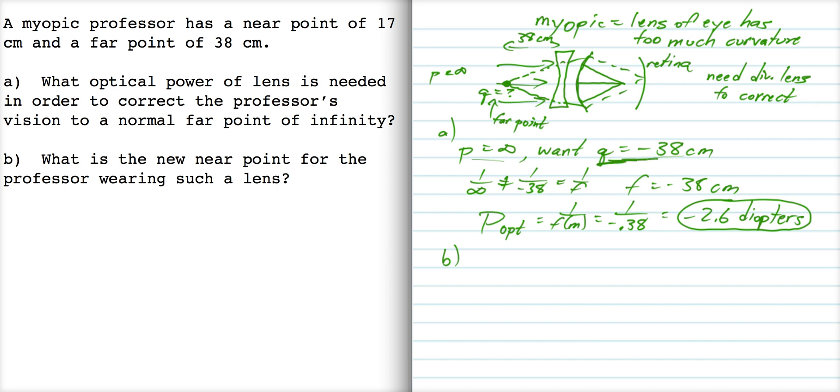The far point is the furthest place an object can be, so we want the lens to form an image at the far point. Now, we want to know what P forms an image at the near point, right? So see how this works? You're putting an image at the far point, and you're putting an image at the near point.